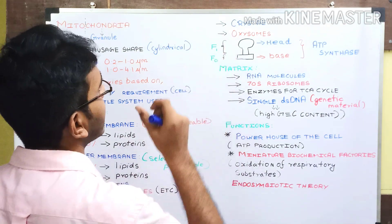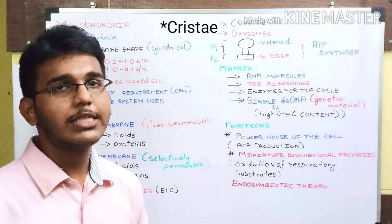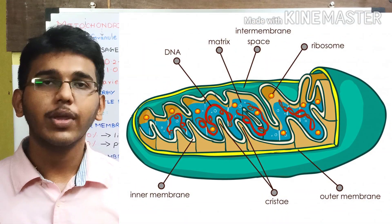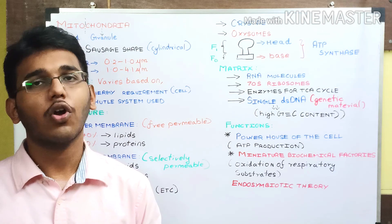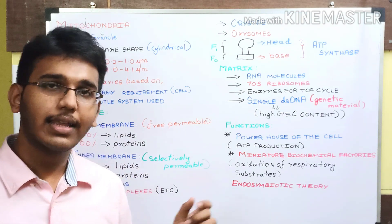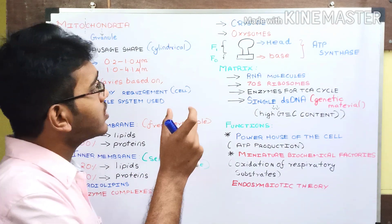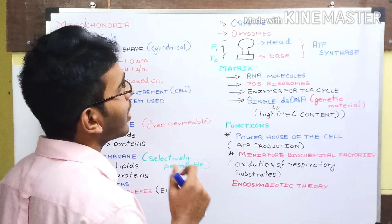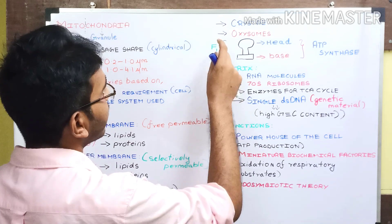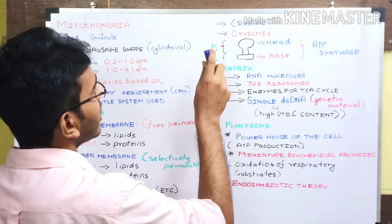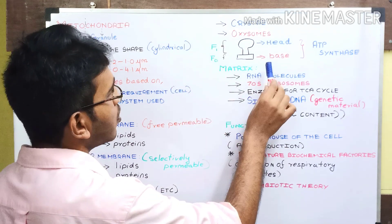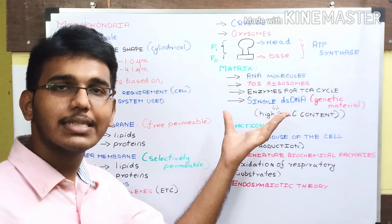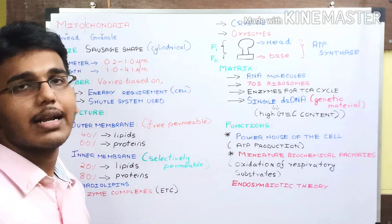Cristae are infoldings present in the inner mitochondrial membrane. Their important role is to increase the surface area of the inner mitochondrial membrane. Protruding from the cristae are structures called oxysomes, which have two parts: the head part (F1 particle) and the base part (F0 particle). These oxysomes are nothing but the ATP synthase enzyme, which helps in the production of ATP by the movement of protons through it.